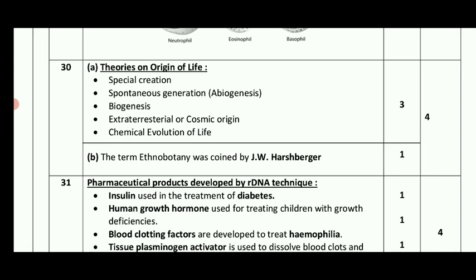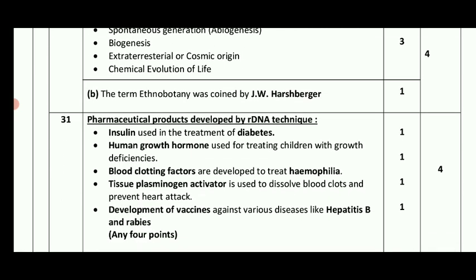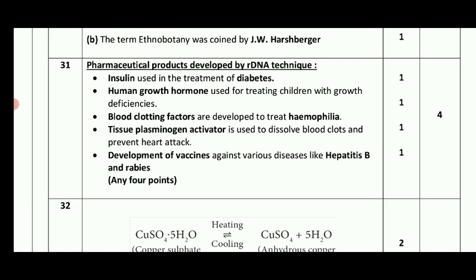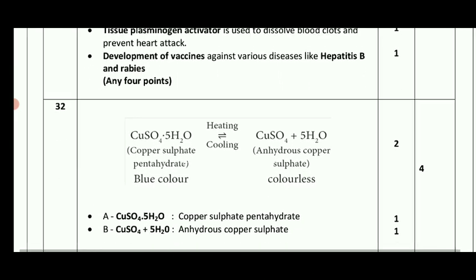The next one is the term ethnobotany. The next is DNA technology, which is the 2 mark. The next is pharmaceutical products developed via rDNA technology in biotechnology: insulin used in the treatment of diabetics, human growth hormone used for treating growth deficiency in children, blood clotting factors developed to treat hemophilia, tissue plasminogen activator used to resolve blood clots and prevent heart attacks, and development of vaccines against diseases like hepatitis B and rabies.